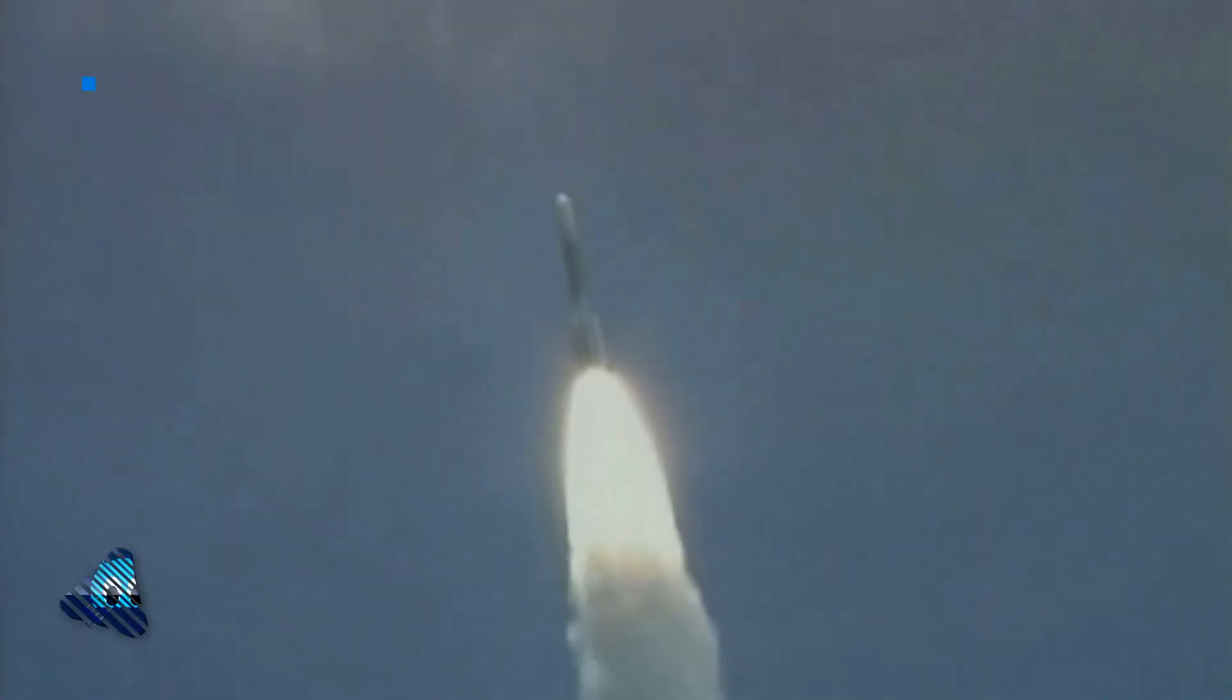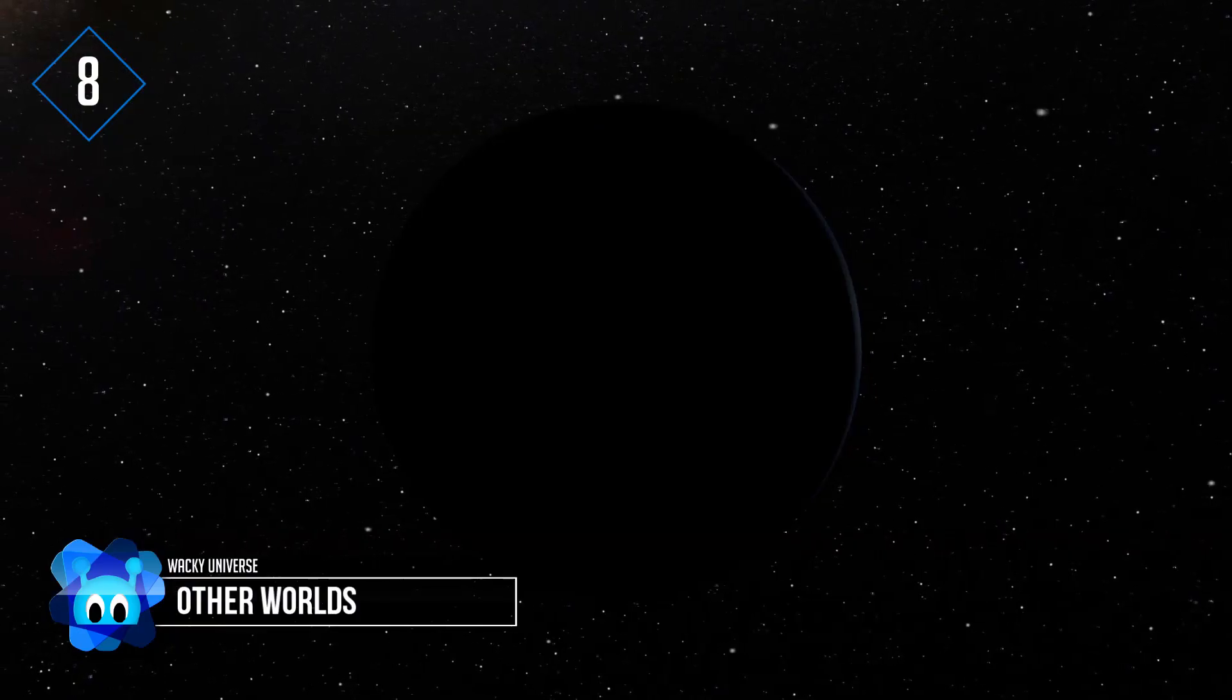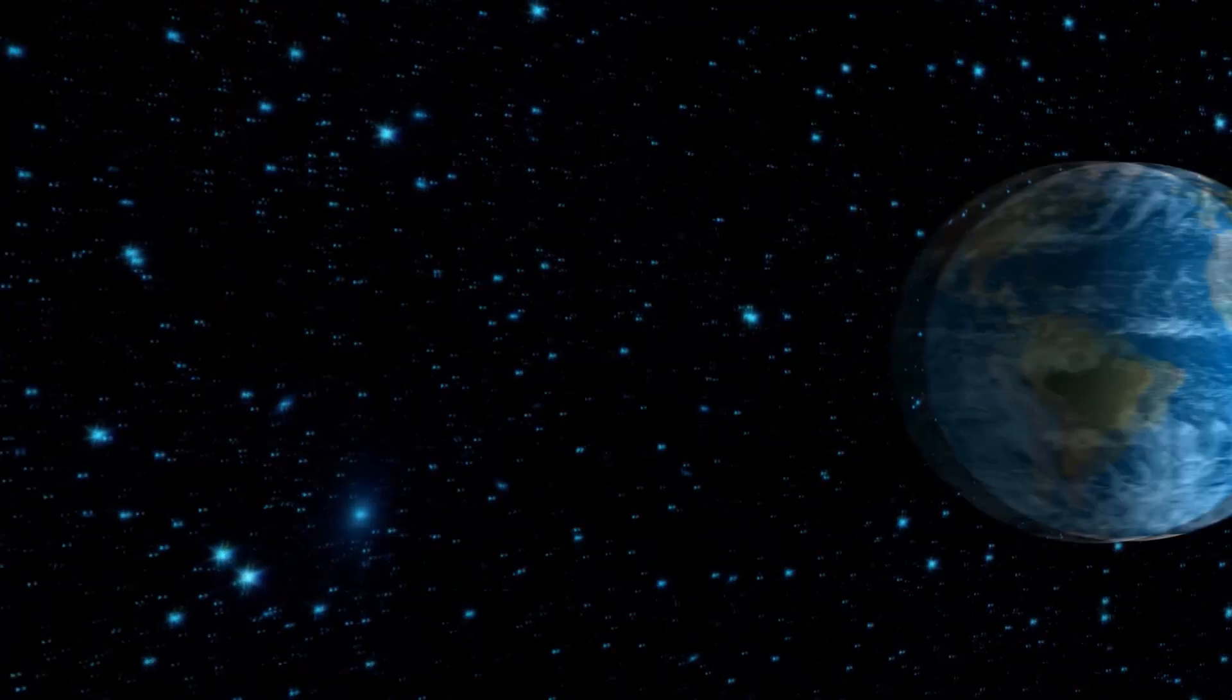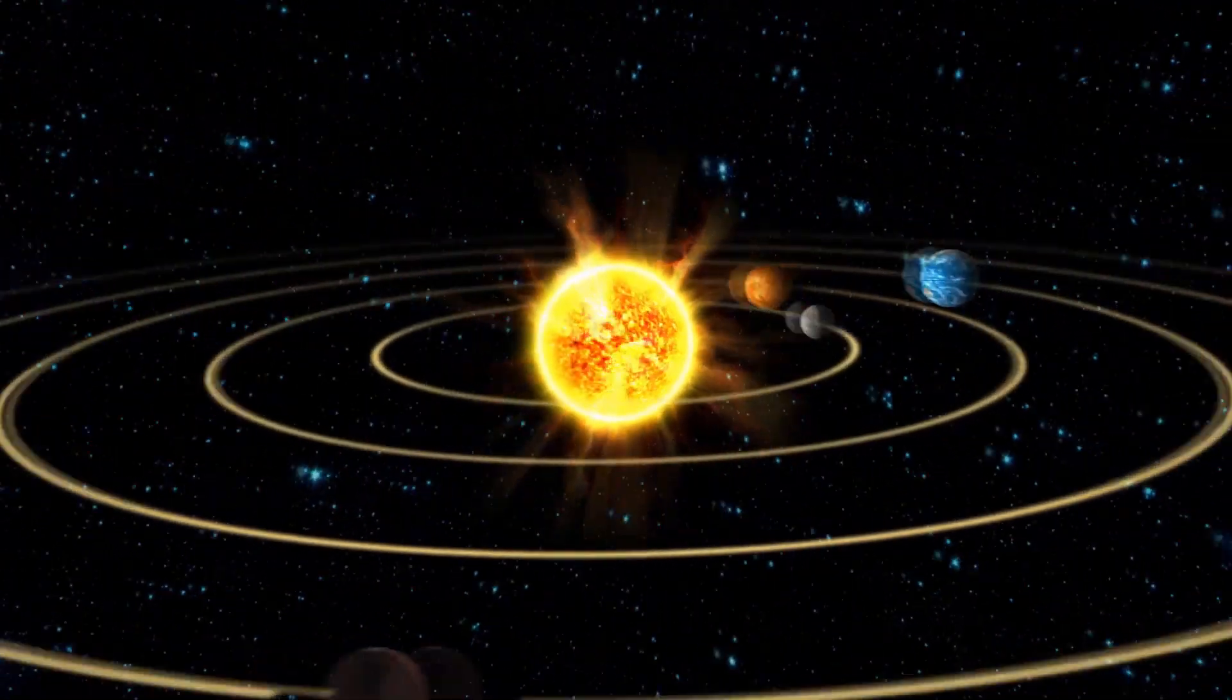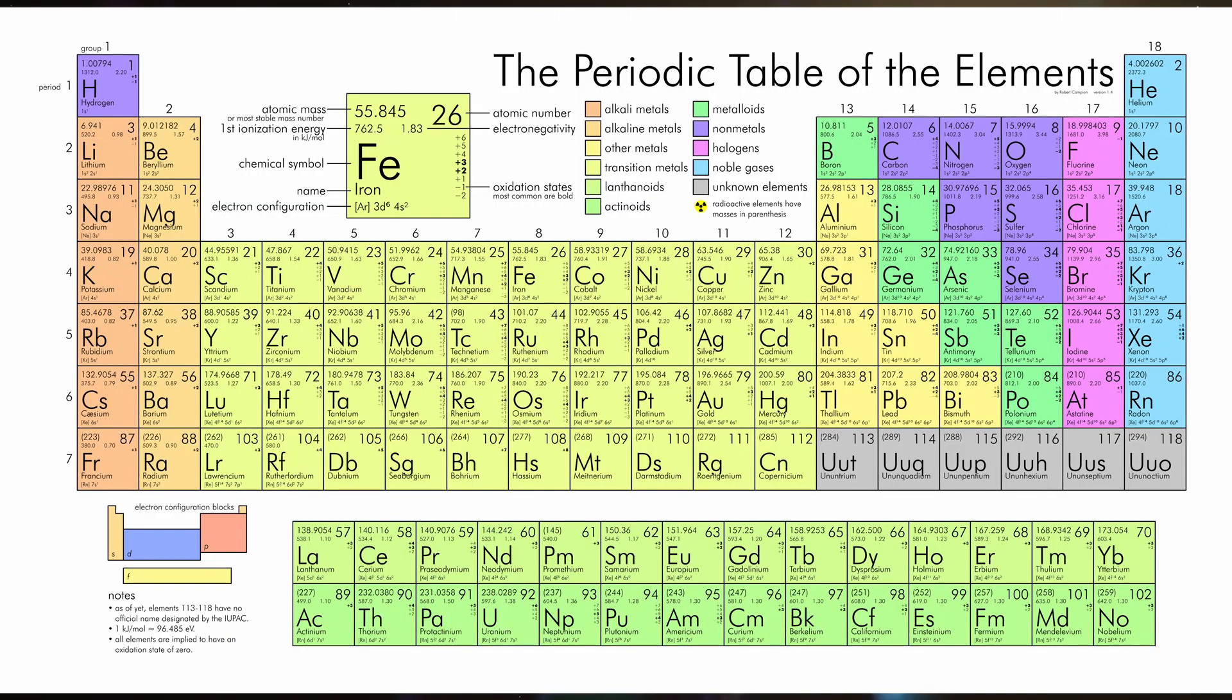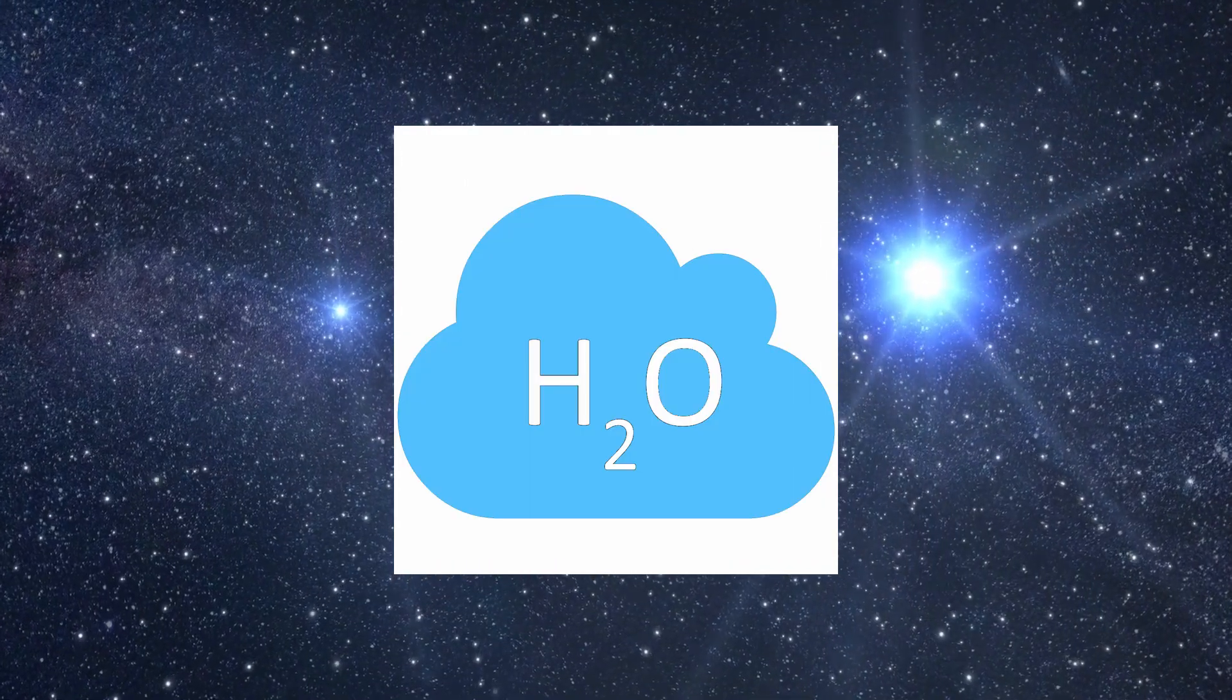When Hubble was launched in April 1990, astronomers had yet to discover planets beyond the solar system we belong to. Since then, over 4,000 have been found. Hubble has provided significant information about these exoplanets by taking the first atmospheric composition measurements. These measurements revealed that the planets are too hot to support life as far as we know, but showed that many components for life are present on extrasolar planets such as sodium, carbon, hydrogen, carbon dioxide, water vapor, and methane.